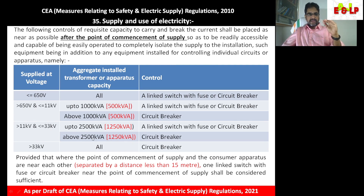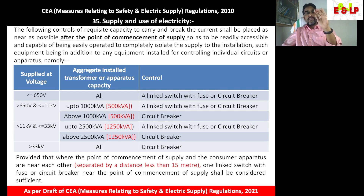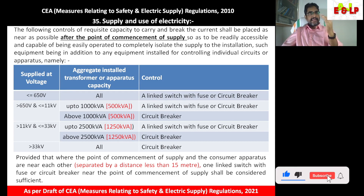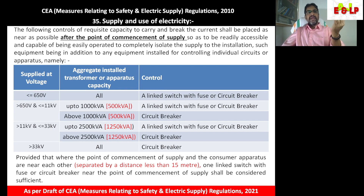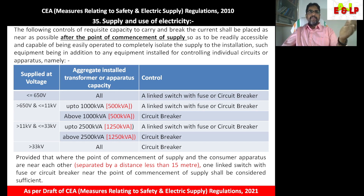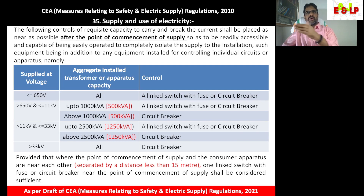There is an additional condition: the switchgear must be provided as near as possible to the point of commencement of supply. However, if there is a main switchboard or distribution board near the point of commencement of supply, there is no need to provide an additional switching gear or circuit breaker — it is not required.